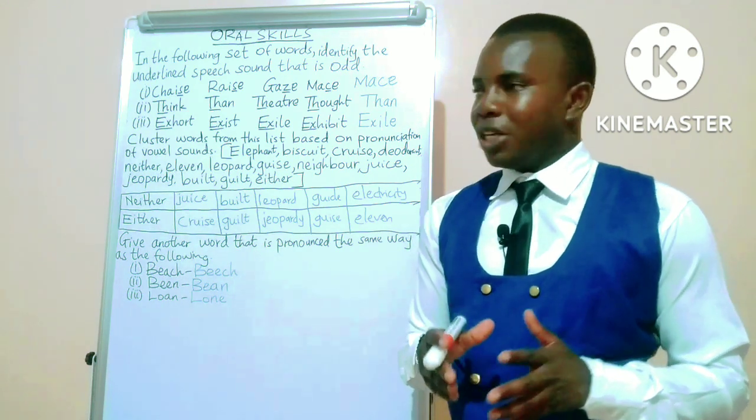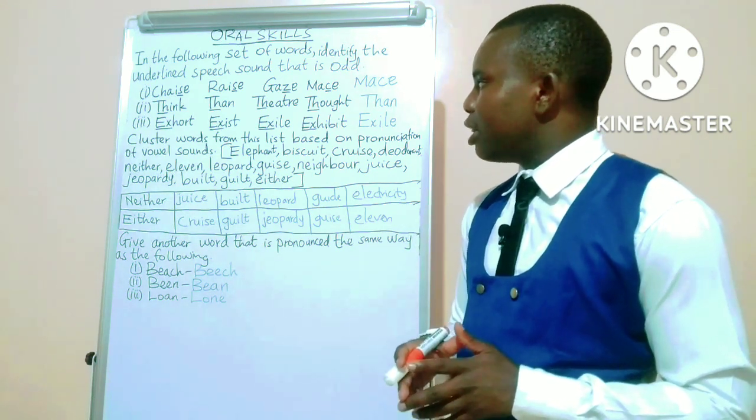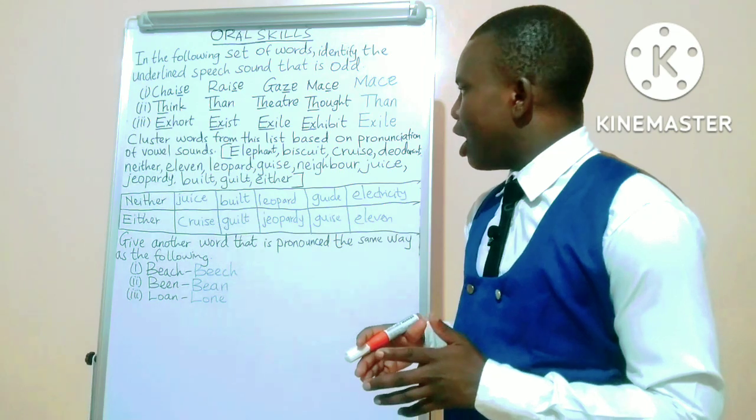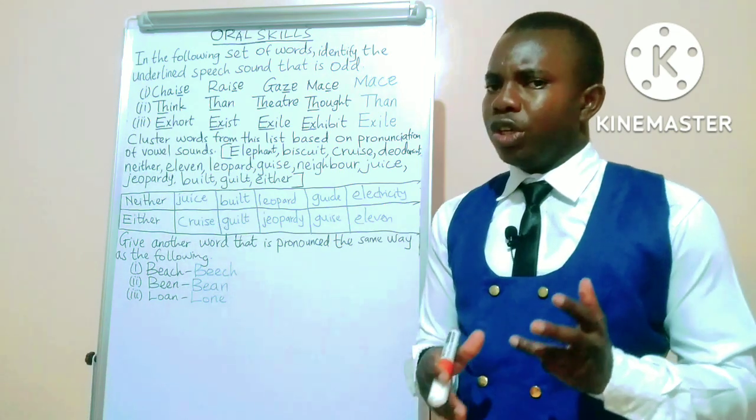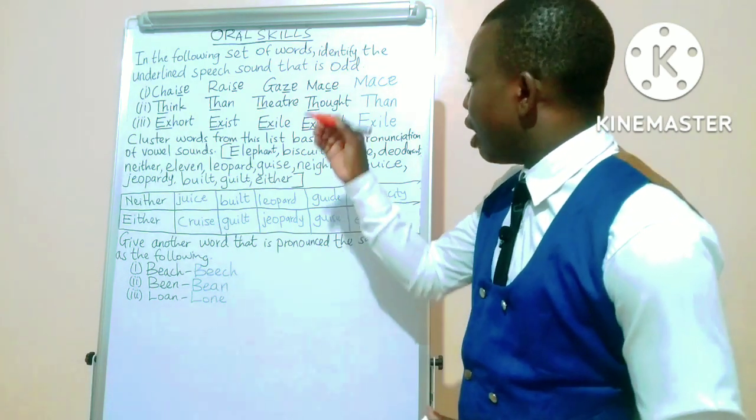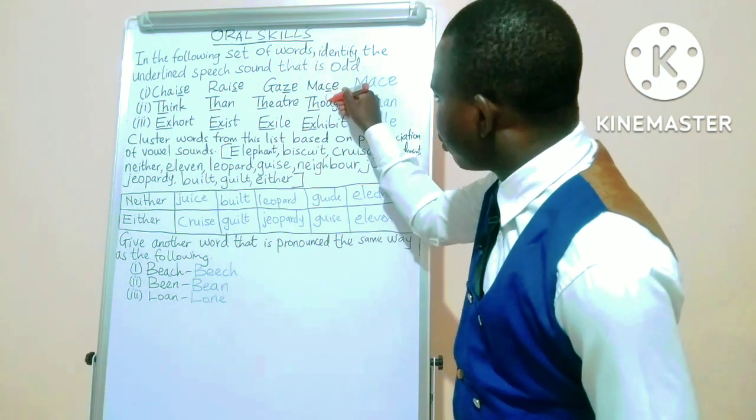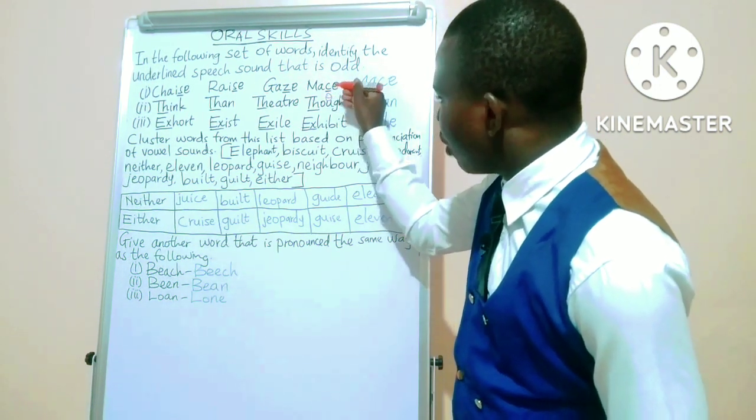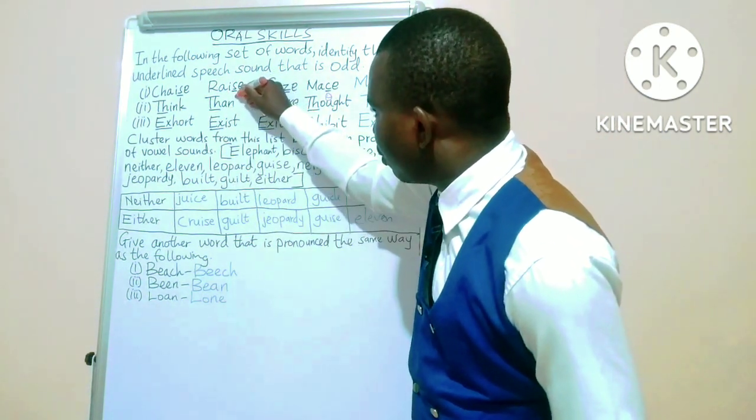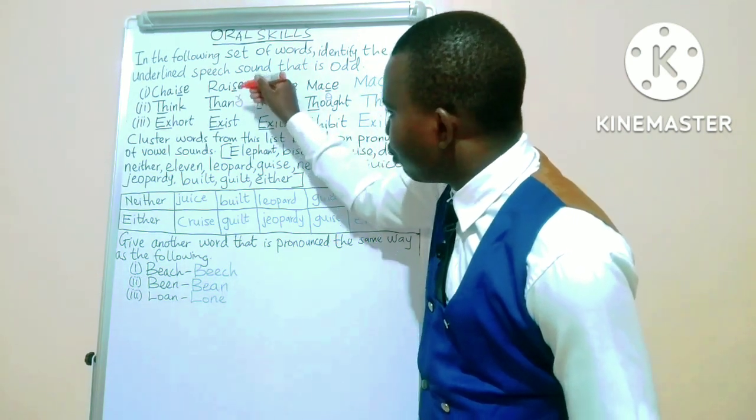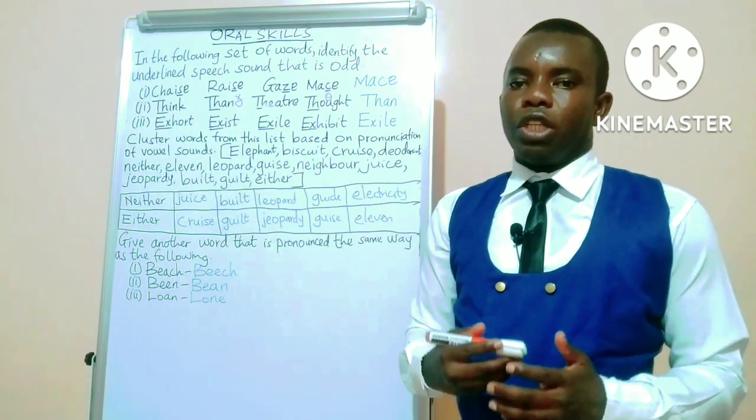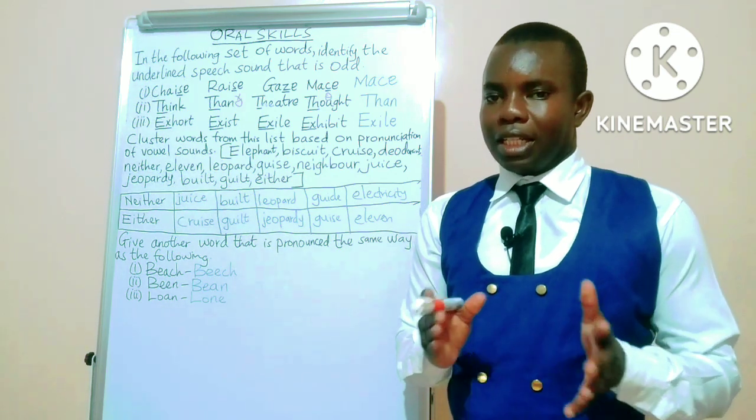In number two, we have think, then theater, and thought. In the three words think, theater, and thought, we have /θ/ sound, and this is the symbol for that sound. Then we have /ð/ sound. So the odd one out here is 'then,' which has the sound /ð/.